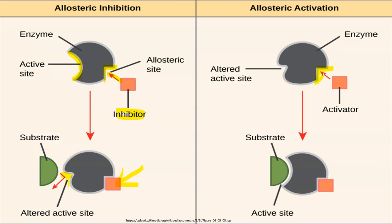For allosteric activation: a molecule binds to the allosteric site. It may be either an inhibitor or an activator. If an activator binds to the allosteric site, the active site changes its conformation so that it allows binding of the substrate. When the substrate binds to the enzyme, product formation takes place. So the activator molecule allows product formation, whereas the inhibitor molecule does not.